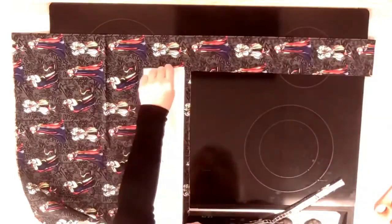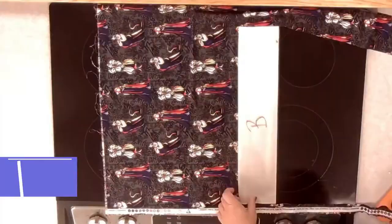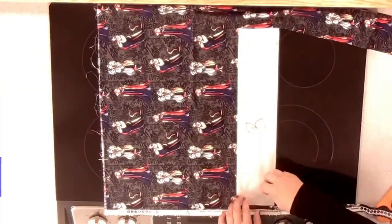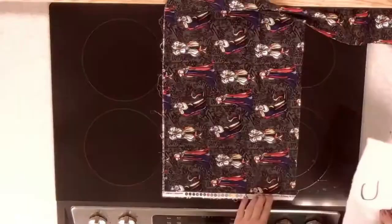Piece B is called a casing and that's where your strings will go. You want to check the direction to make sure that your characters or patterns on your fabric are facing the right way.